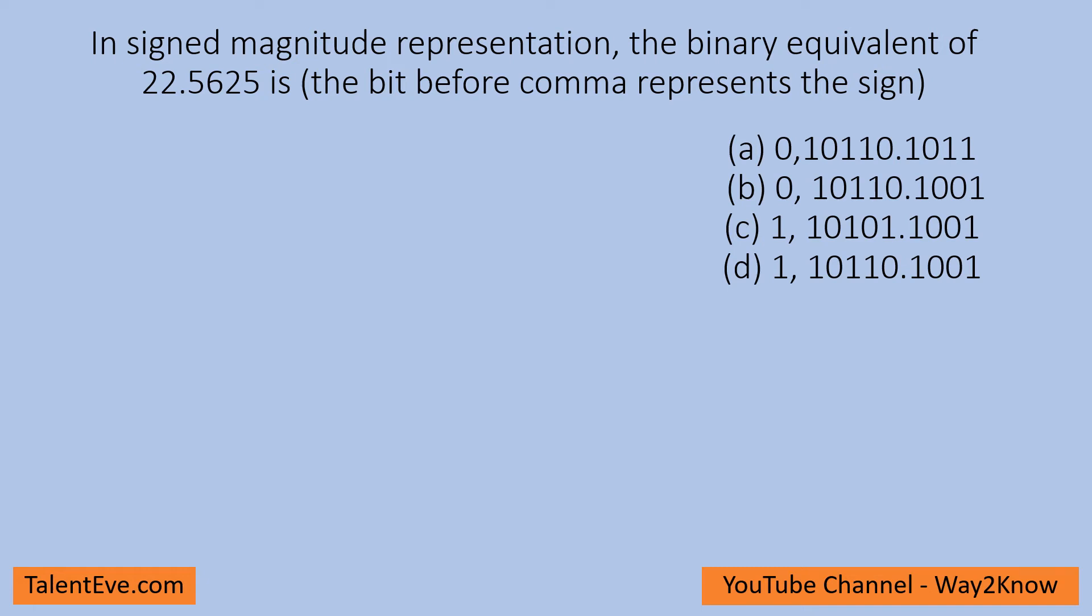Let us try to solve this question. What is the signed magnitude representation of this particular number? The binary equivalent in signed magnitude representation. These are the multiple choice options that are present. Basically, what it is representing is that whatever the comma is there, before that represents the sign of that particular number.